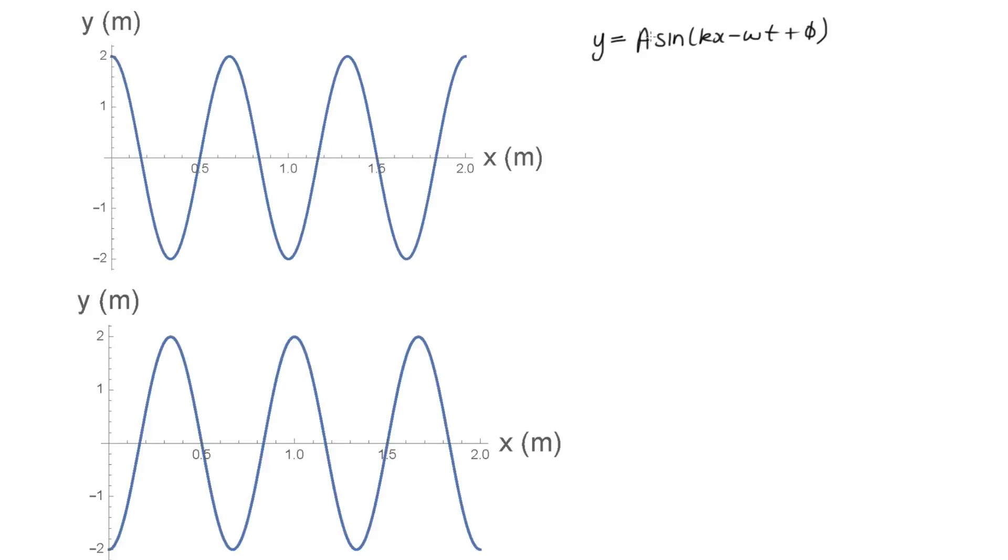Okay, so a is the amplitude, that's the maximum displacement of the wave from its equilibrium position. So that's given by this height here, so it's equal to 2 meters. So a is equal to 2 meters.